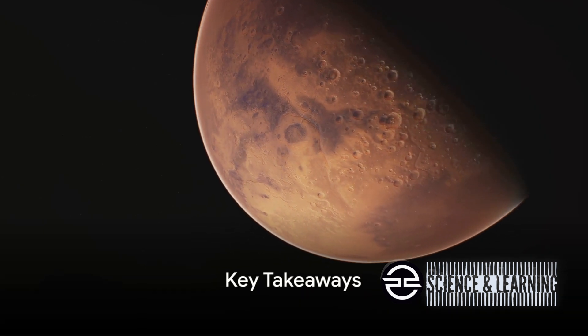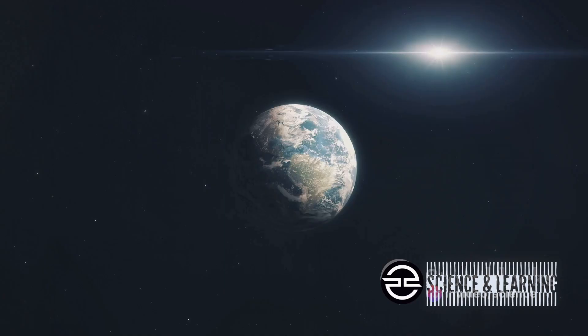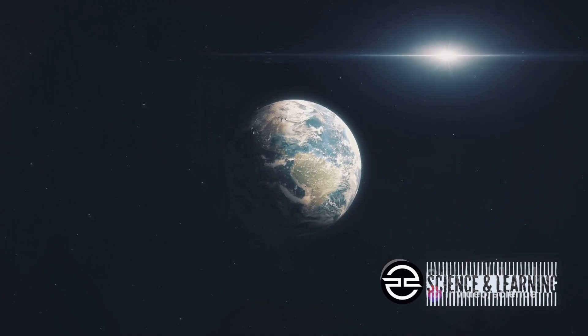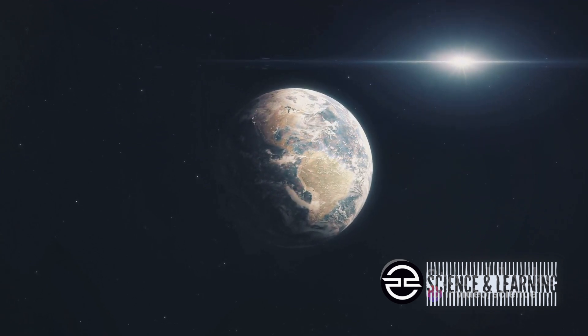Now that we've ventured deep into the cosmic dance between Mars and Earth, let's recap the key points. Every 2.4 million years, Mars and Earth engage in a gravitational tango that influences our climate and oceans.